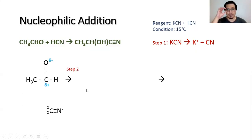In step two, the first thing you should do is assign the delta positive and delta negative on the carbon and the oxygen. The first curved arrow will be here, coming from the lone pair of electrons from the carbon, which is produced from step one, attacking the carbon delta positive.